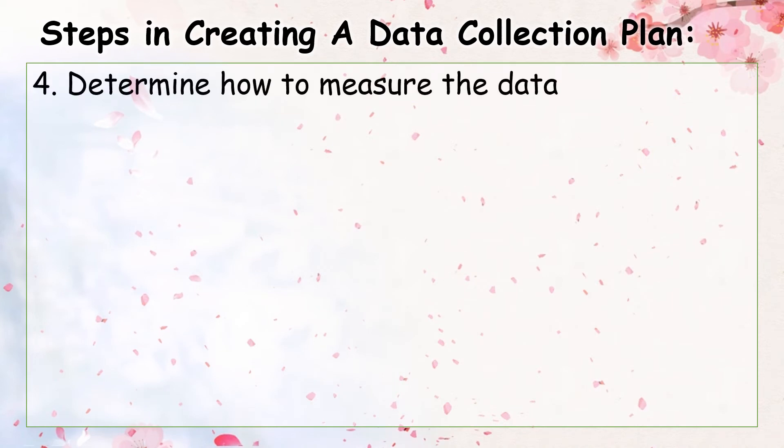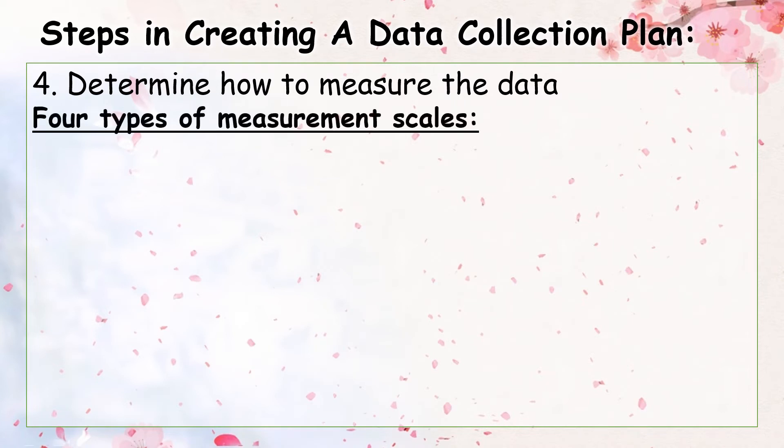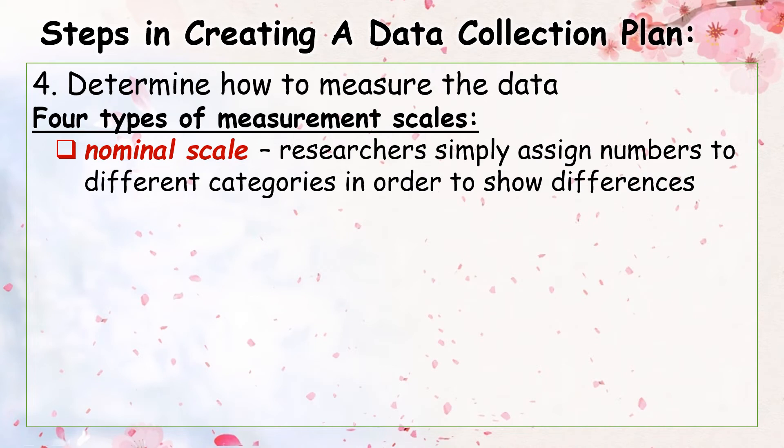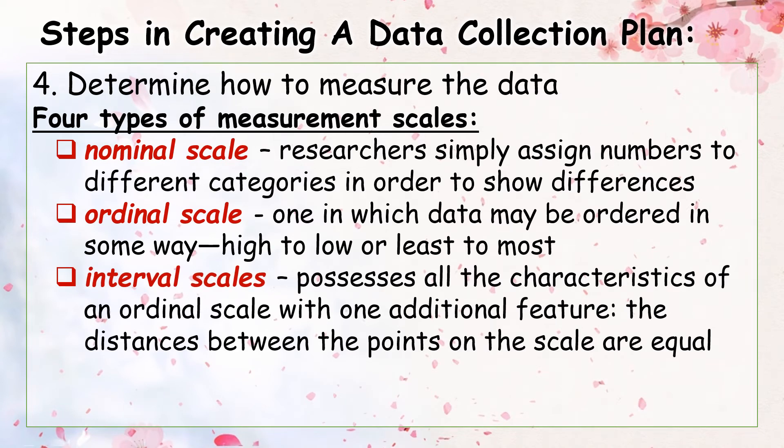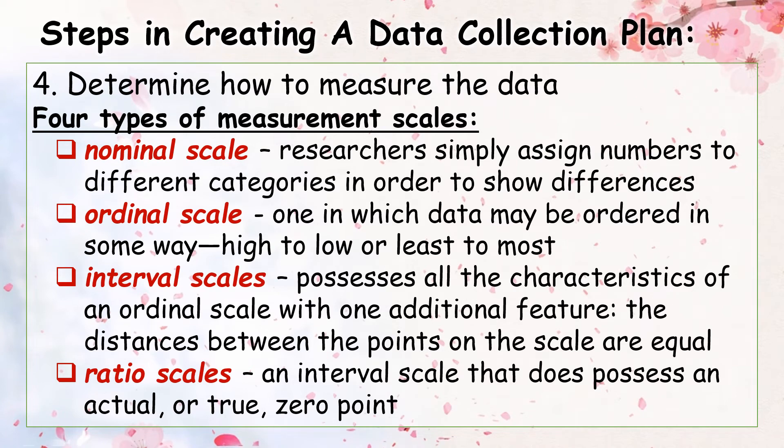Step four: determine how to measure the data. There are four types of measurement scales. One is the nominal scale, where the researchers simply assign numbers to different categories in order to show differences. For example, a researcher concerned with the variable of gender might group data into two categories, male and female, and assign the number 1 to females and the number 2 to males. Second type is the ordinal scale, one in which data may be ordered in some way, high to low or least to most. Third, interval scales possess all the characteristics of an ordinal scale with one additional feature: the distances between the points on the scale are equal. Ratio scales: it is an interval scale that possesses an actual or true zero point.